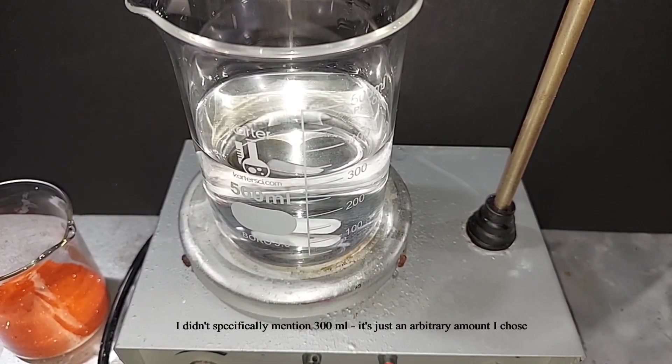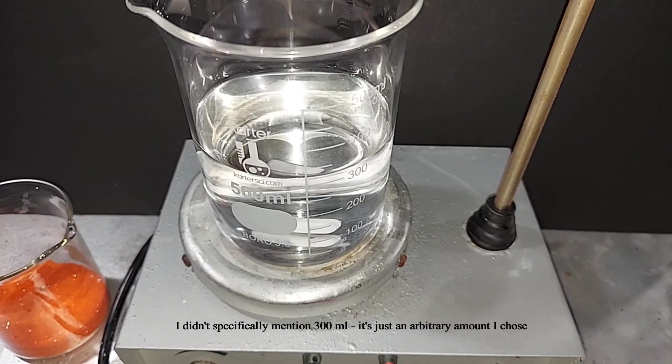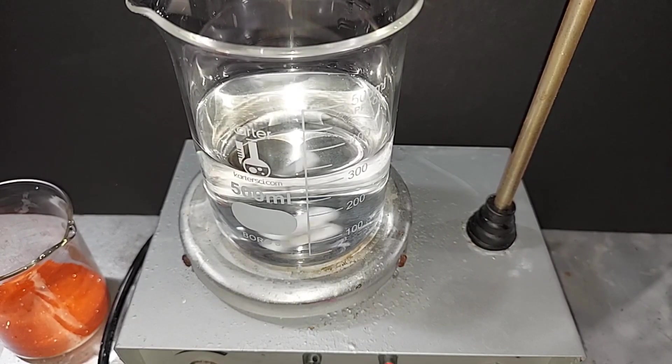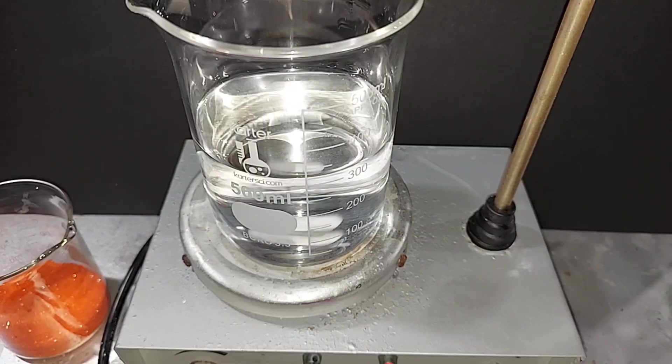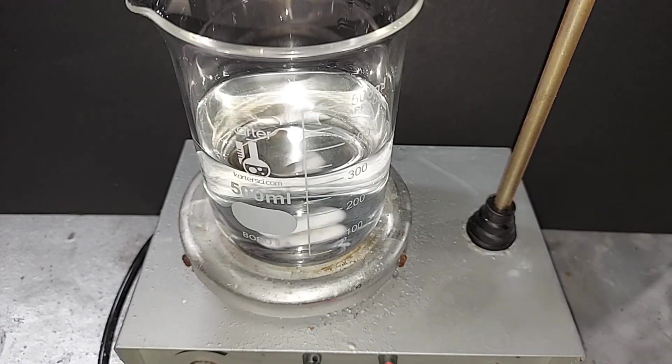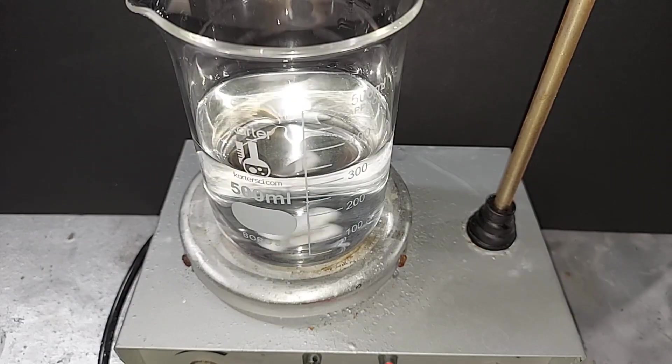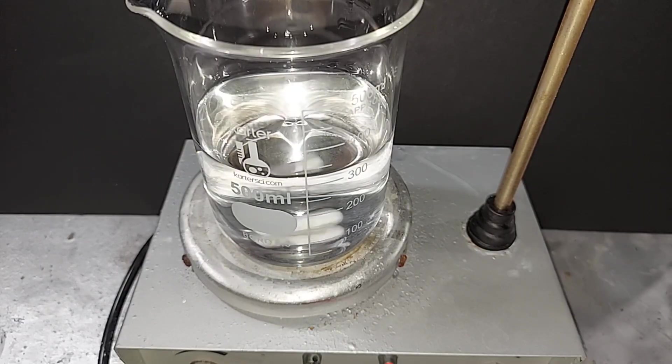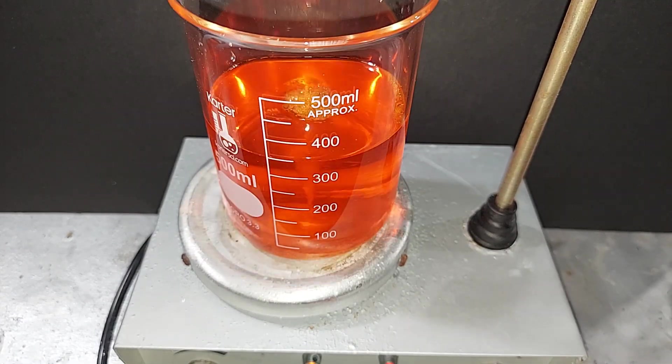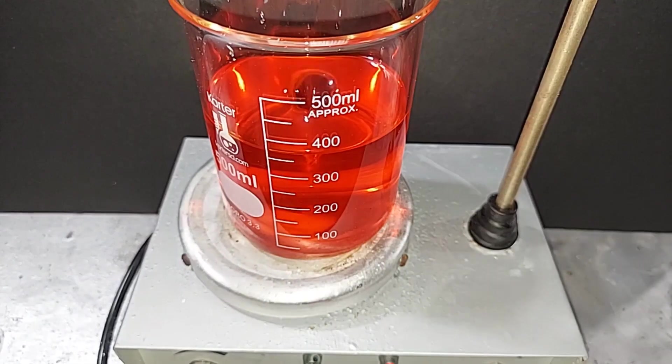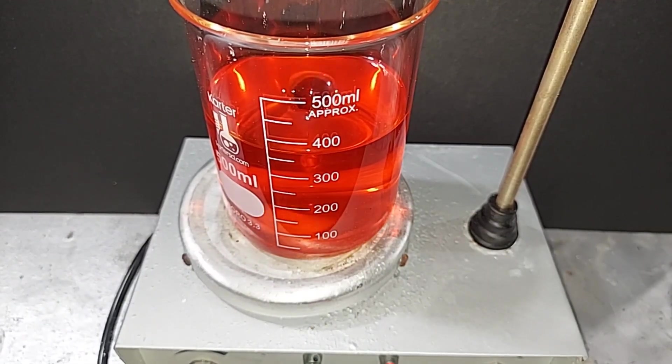I have the 300 milliliters of distilled water in there like we talked about. I'm just going to start the magnetic stir up here and we're going to add our ammonium dichromate slowly. There is more than enough water here for this to dissolve. As I mentioned, the idea here is just to get it dissolved, so you can use more than you actually need. The ammonium dichromate is completely dissolved.